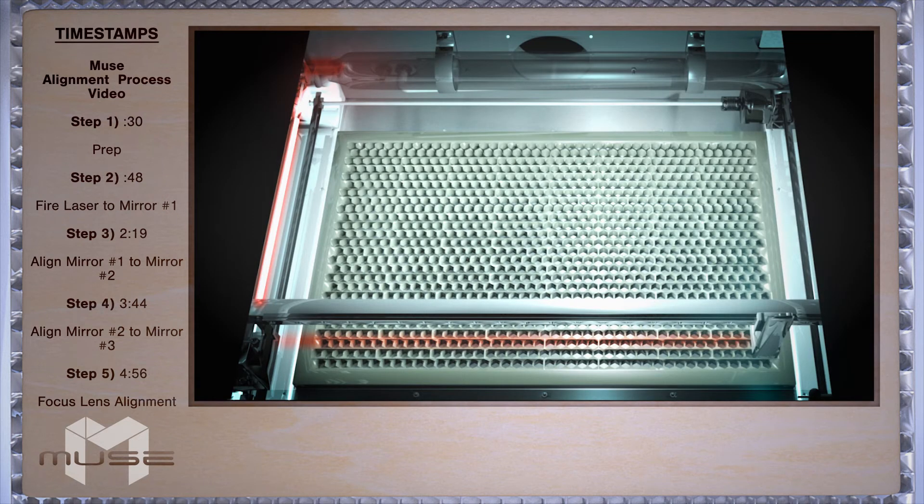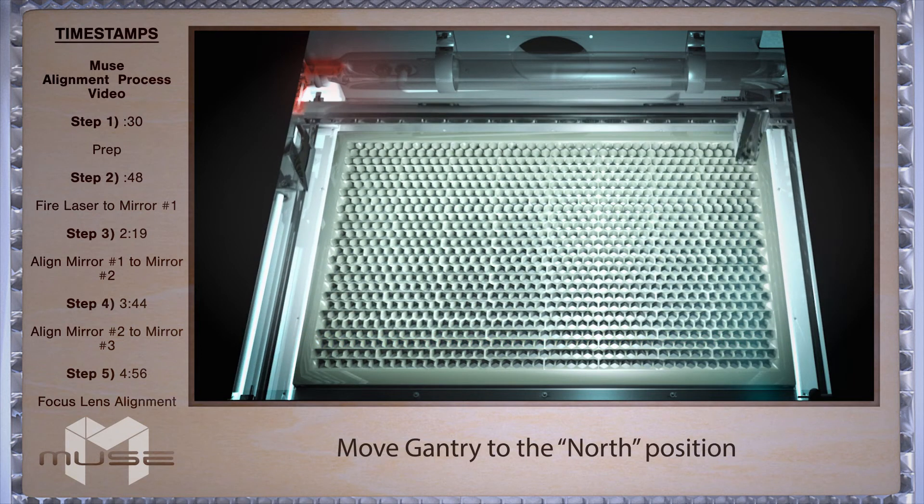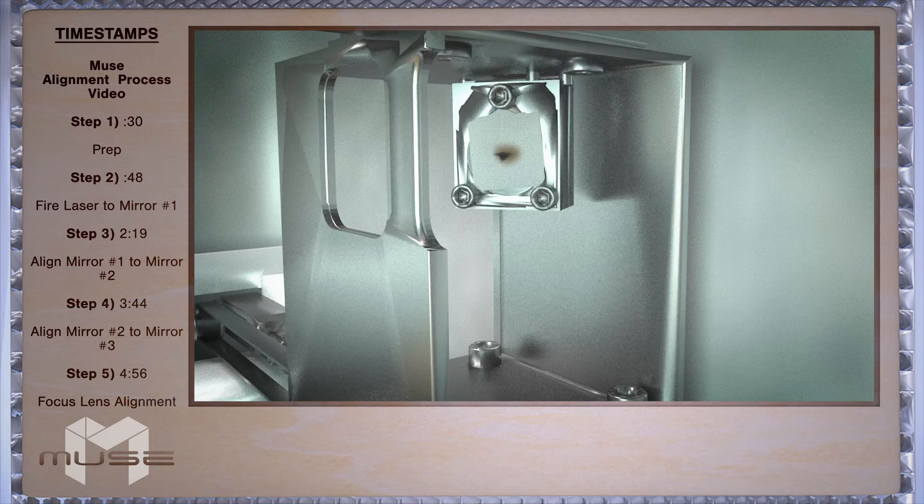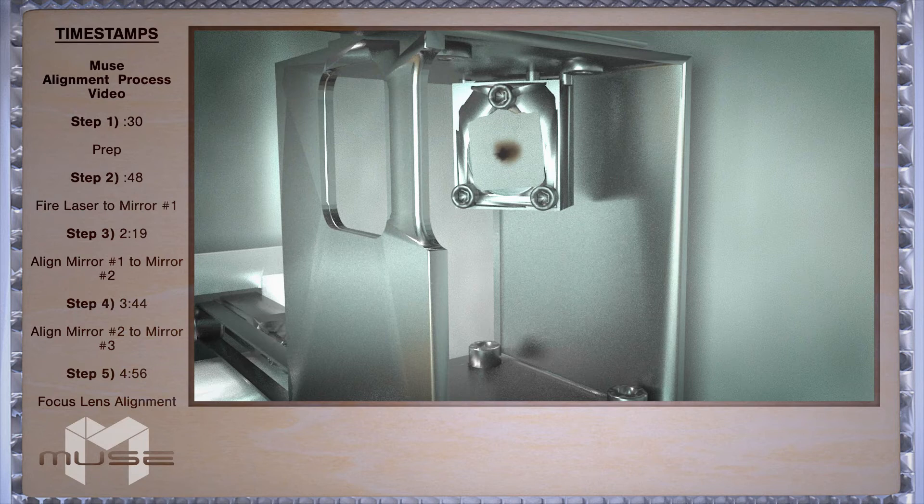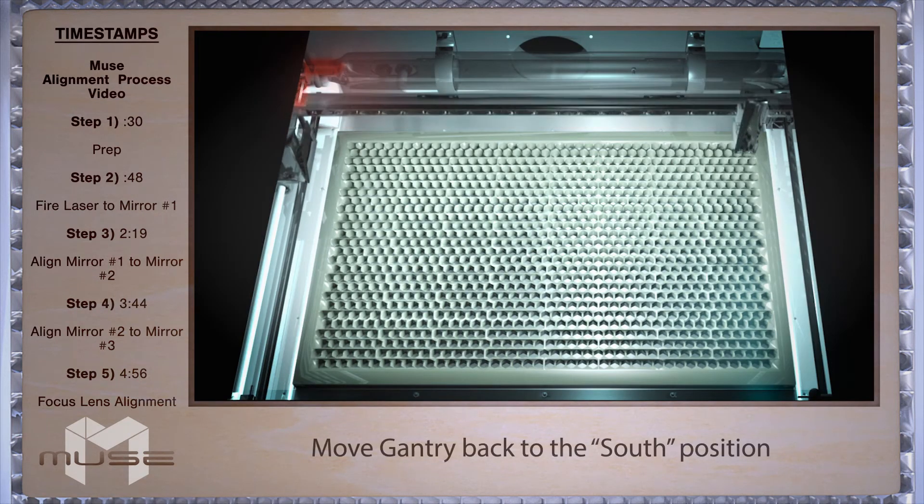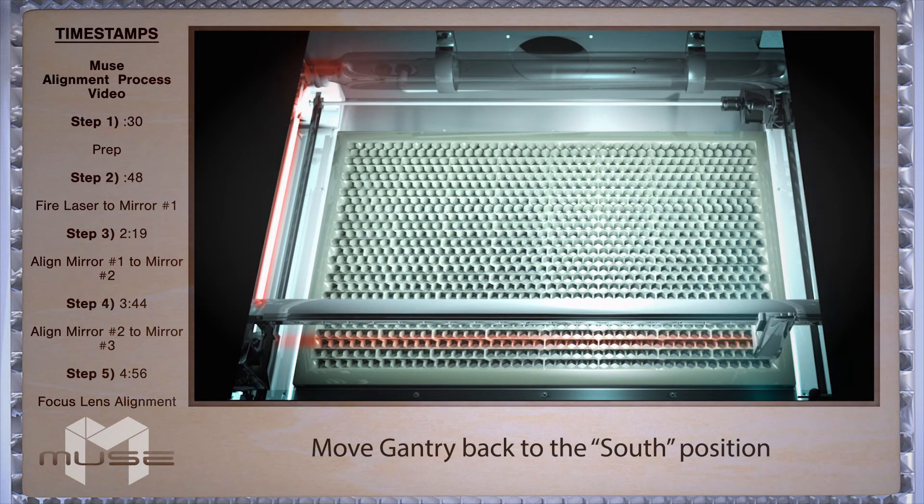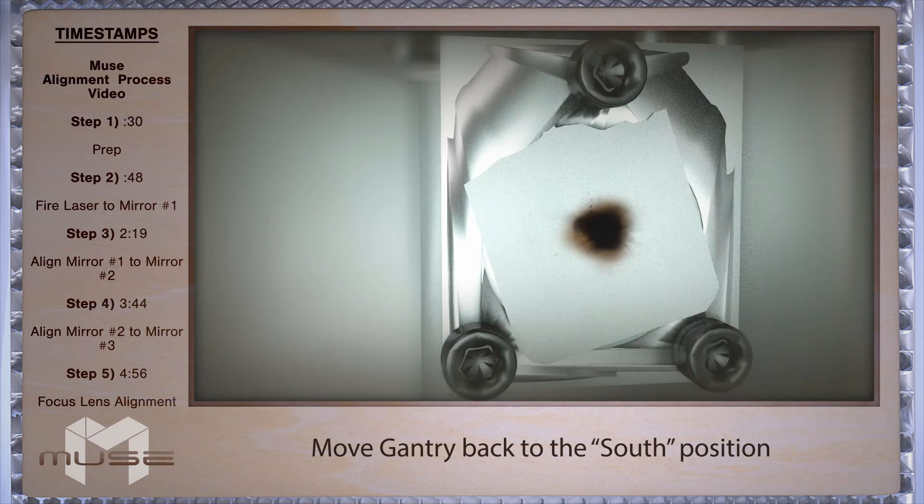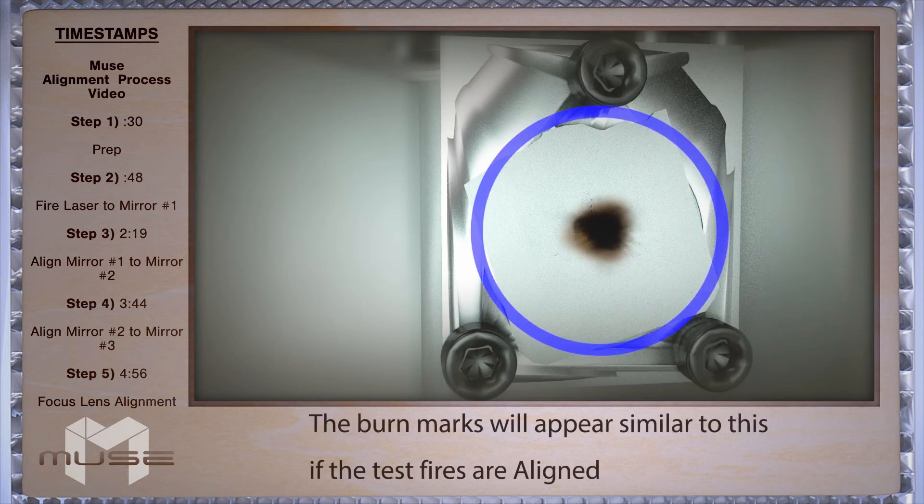Now that we have a test fire on mirror two from a far position, move the X gantry to the uppermost position in the machine. Now test fire again. Now put the gantry to the far south position. There should be two observable burn marks on your thermal paper. If they overlap perfectly then you can move on.